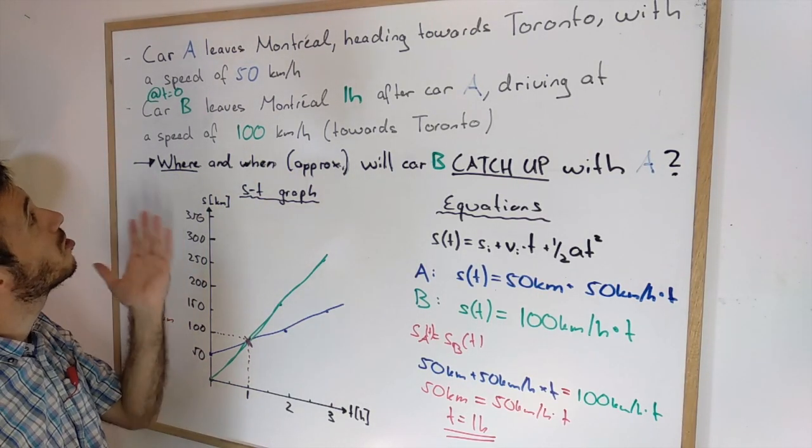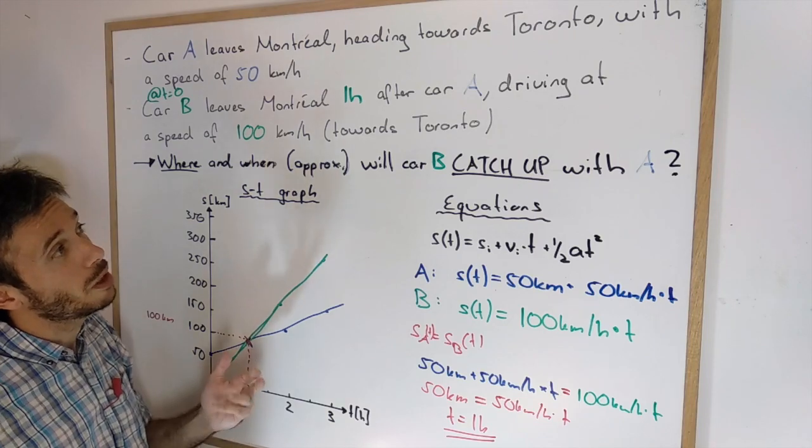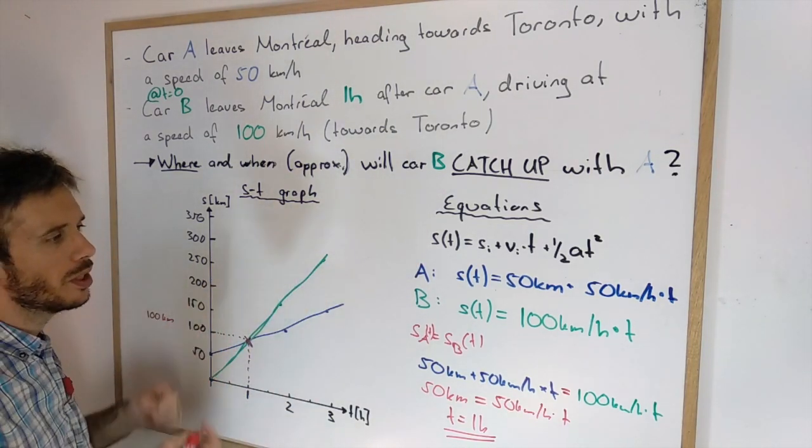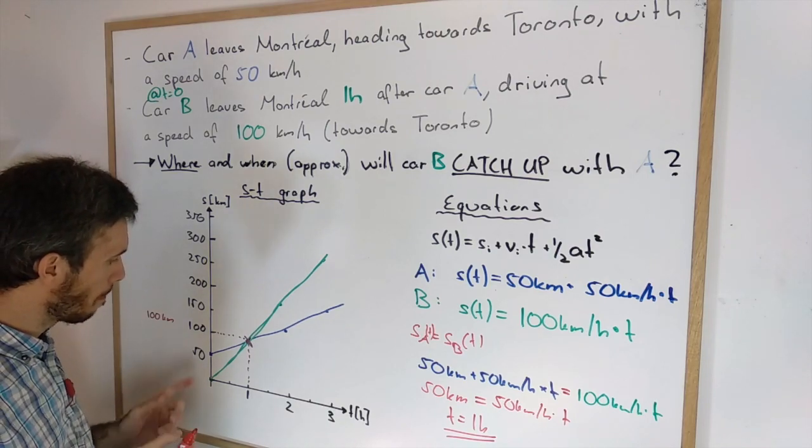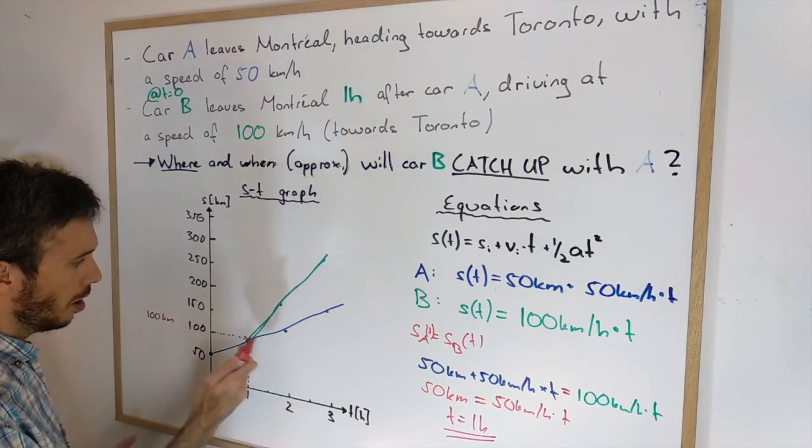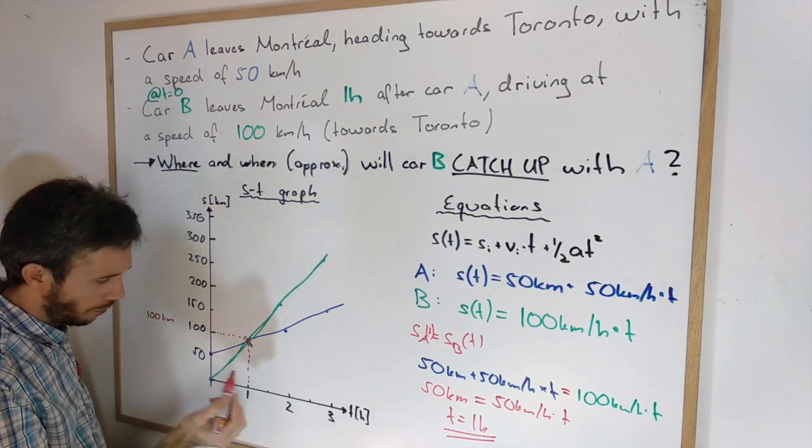Now this was a pretty straightforward simple example where we had no accelerations, or we were ignoring them, because over a long period of time we can totally do that. What, however, if you have something where a car is accelerating? Well, the curve then would simply look a bit different. For example, if I had a car C that accelerates,